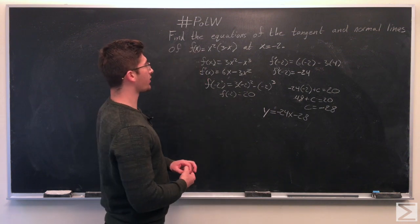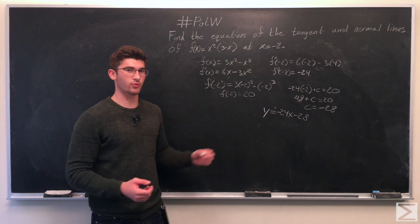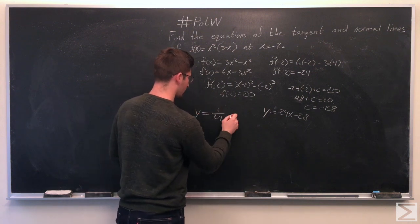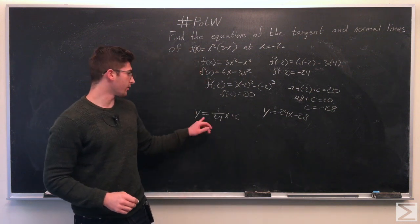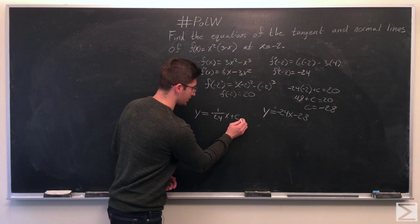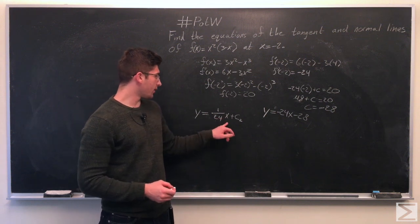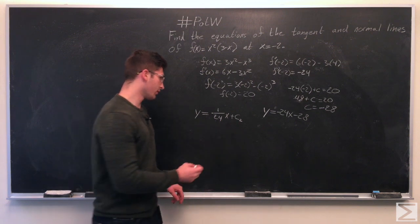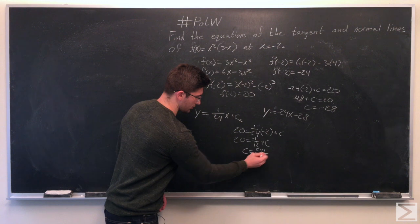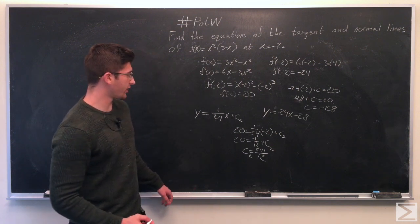And now we need to find the equation for our normal line. So the slope of the normal line at x equals negative 2 is going to be the negative reciprocal of the slope of the tangent line. So it's going to be y equals 1 over 24x plus c, some constant. And let's go ahead and call that c2. So now we need to do the same thing. We need to set this equal to 20 and solve for c2. So we get c2 equals 241 over 12. So then y equals 1 over 24x plus 241 over 12.